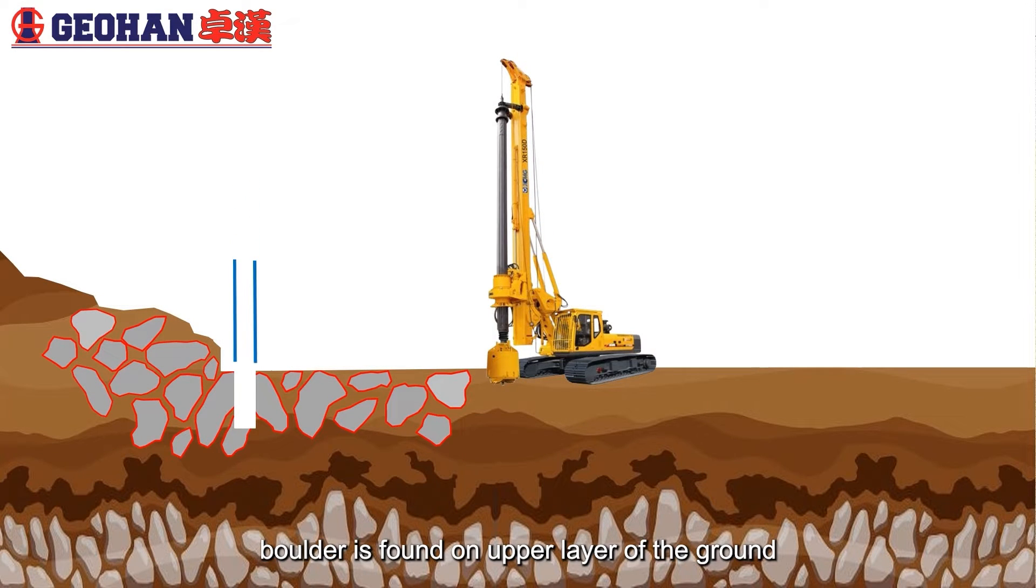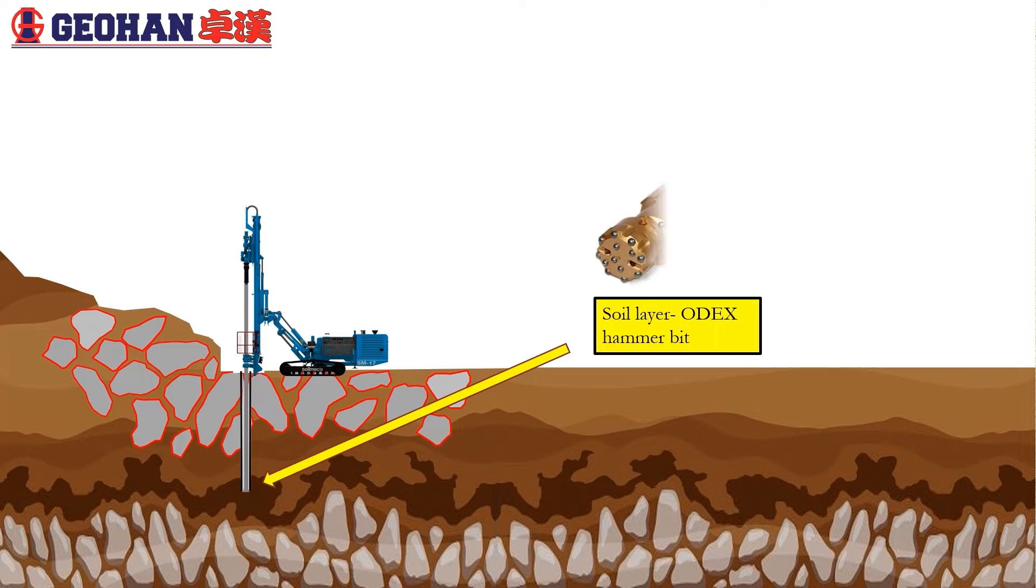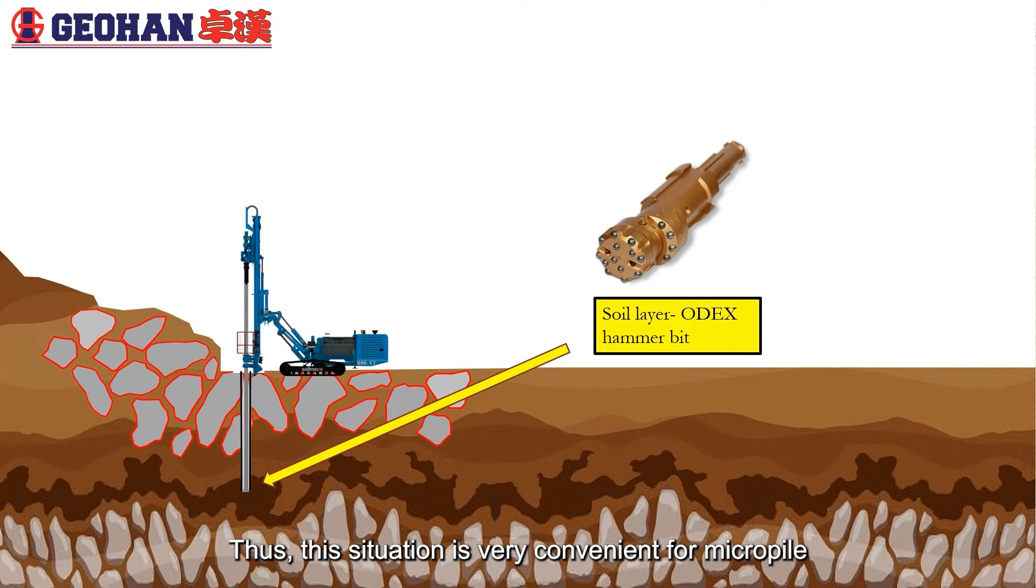In some situations, boulder is found on upper layer of the ground. Temporary casing is difficult to be installed before pile is proposed to be constructed. This situation may cause eccentricity of temporary casing as well due to rock falling from surrounding slope area. Thus, MicroPile using ODEX hammer system is very convenient to be constructed, as temporary casing can be easily installed when drilling, as it produces lower vibration compared to bored pile which prevents movement of rocks falling from slope area.